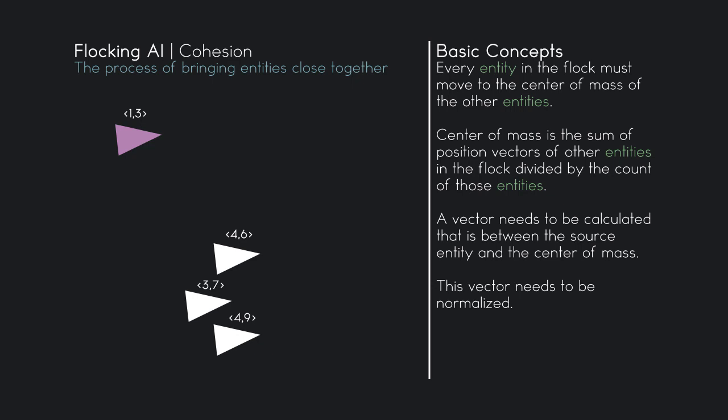For example, if we want to calculate the center of mass for a different entity, we need to include all the other entities in the flock. Before, we calculated using one entity — that entity was not included in its own calculation. But if we are calculating cohesion for a different entity, we need to include the first entity. Every calculation needs to have all the other entities included — the only entity not included in the calculation is the entity itself.